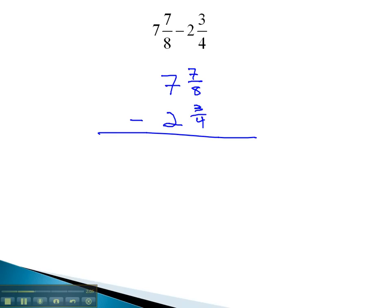The common denominator between 8 and 4 is 8, so the 7 eighths doesn't need any adjustment. The 3 fourths does, multiplying the denominator of 4 by 2 over 2 will give us 6 eighths to subtract from the 7 eighths. 7 minus 6 leaves 1 eighth, and 7 minus 2 on the whole numbers gives us 5, and we have our final solution of 5 and 1 eighth.